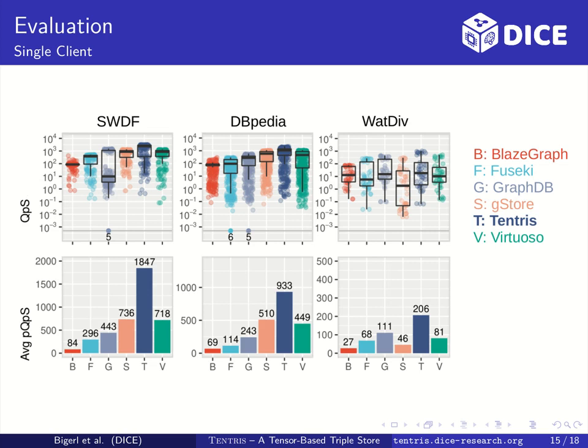We tested the triple stores BlazeGraph, Fuseki, GraphDB, gStore, Virtuoso and of course Tentris. Tentris is the dark blue in the plots or the second left. In the scatter plot on top you can clearly see that Tentris outperforms all other triple stores for many queries. Also the median is higher than that of any other triple store for all three datasets. With respect to average penalized QPS shown in the plot below, Tentris is in all benchmarks about two times faster than the second fastest triple store.